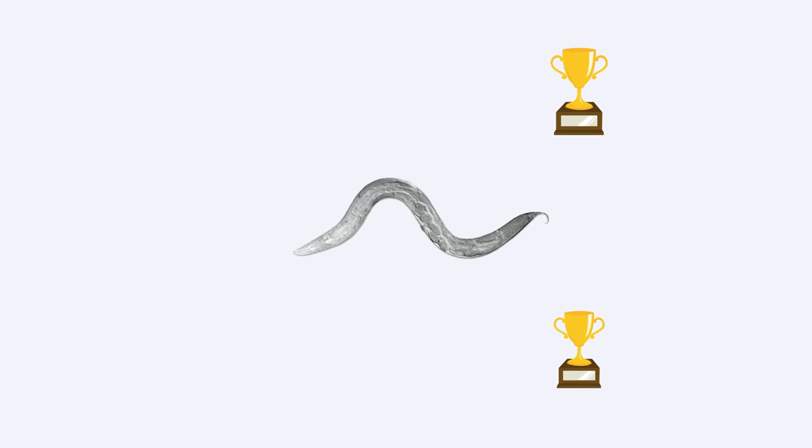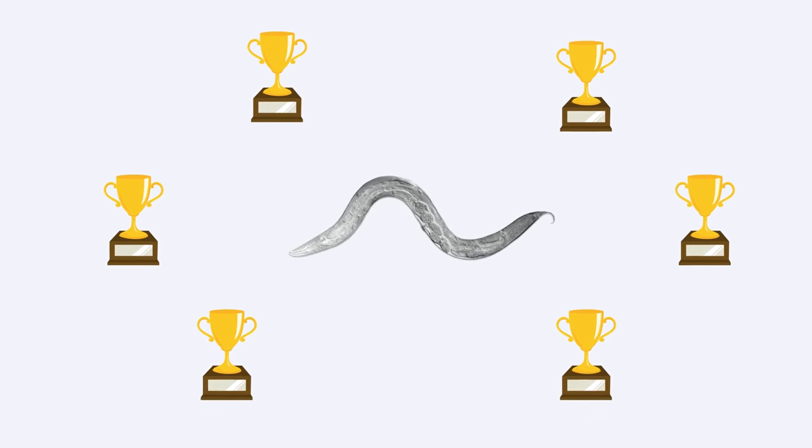Even though this tiny worm is only the size of a full stop, it has had a huge impact on our understanding of human biology. The importance of C. elegans in genetic research is highlighted by its key role in six Nobel Prize winning studies.